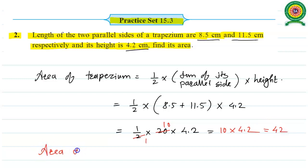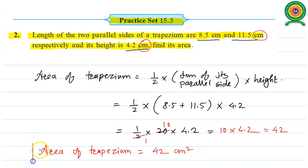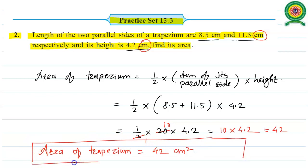At last, area of given trapezium equals 42 square centimetres. The unit is centimetre square, or you may write it as sq. cm, which stands for square centimetre. Hence we have 42 cm² or square centimetre.